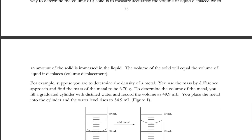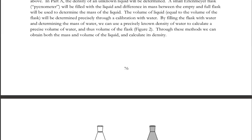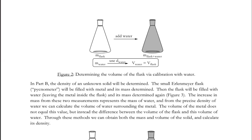In the first part of the experiment, we are working with determining the density of a liquid — a liquid much like gasoline. We are putting it into a flask called a pycnometer. Before we put it in the flask, we will determine the mass of the flask. We will fill it with liquid and then determine the mass of the liquid and flask. The difference is the mass of just the liquid.